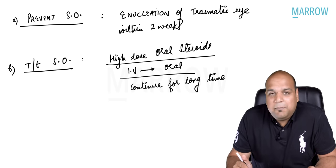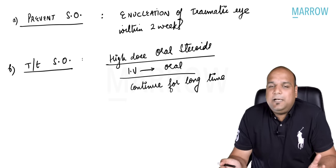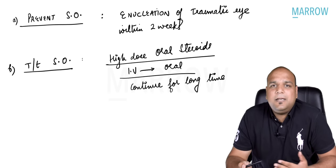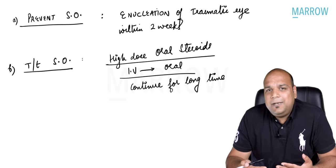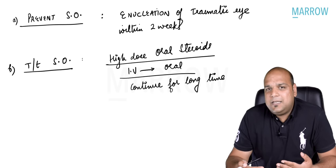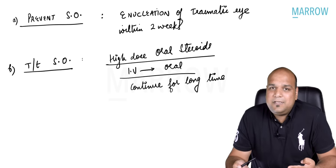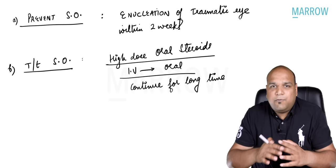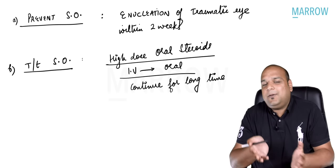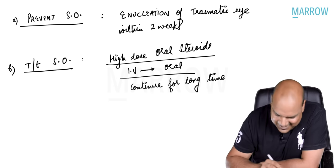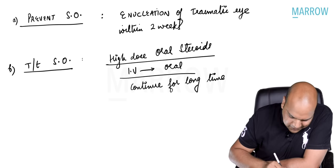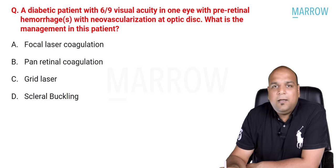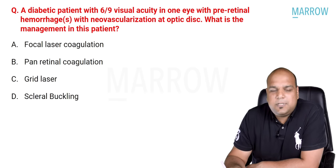Sympathetic ophthalmitis is a very simple condition, probably the most important manifestation of penetrating trauma that forms a topic for exam questions. Moving on to the third question in NEET PG 2022 recall — a retina-based question: a diabetic patient.